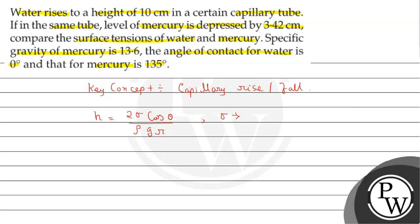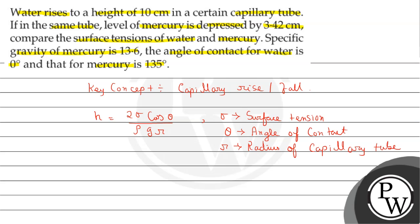Here sigma is the surface tension, theta is the angle of contact, g is the acceleration due to gravity, r is the radius of the capillary tube, rho is the density of the liquid, and h is the height of fall or rise.